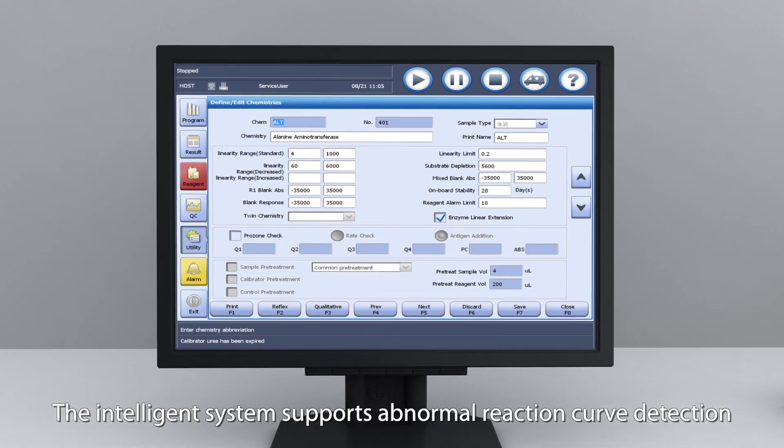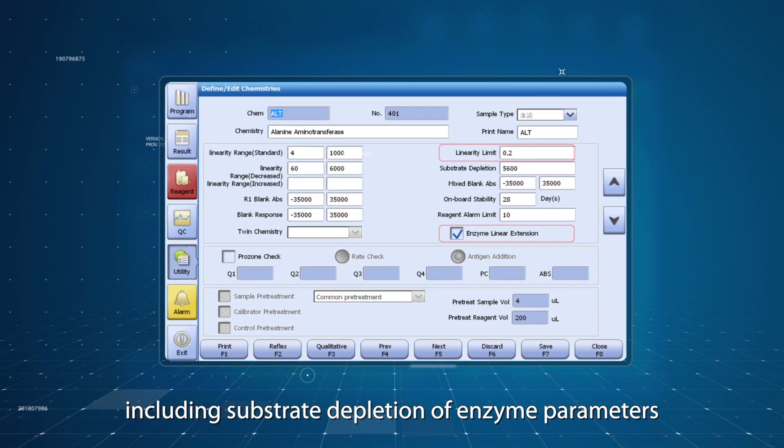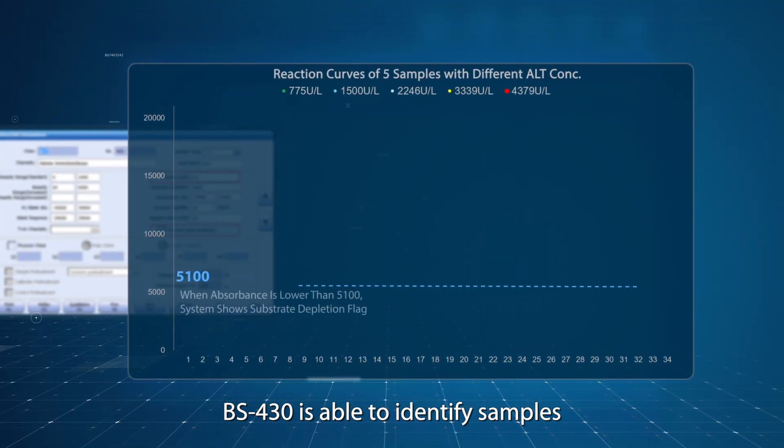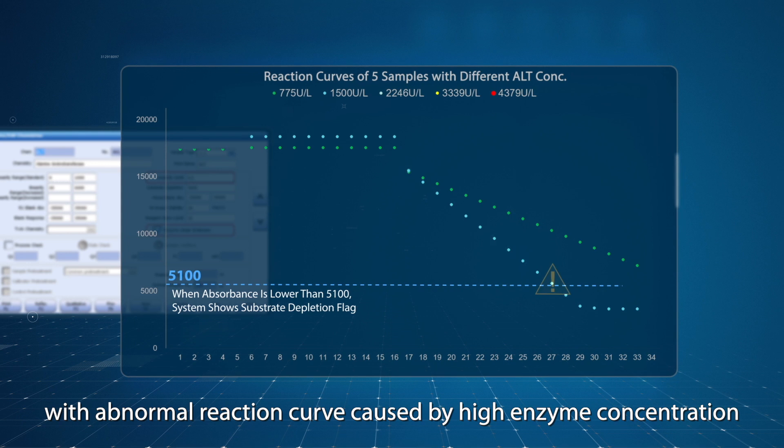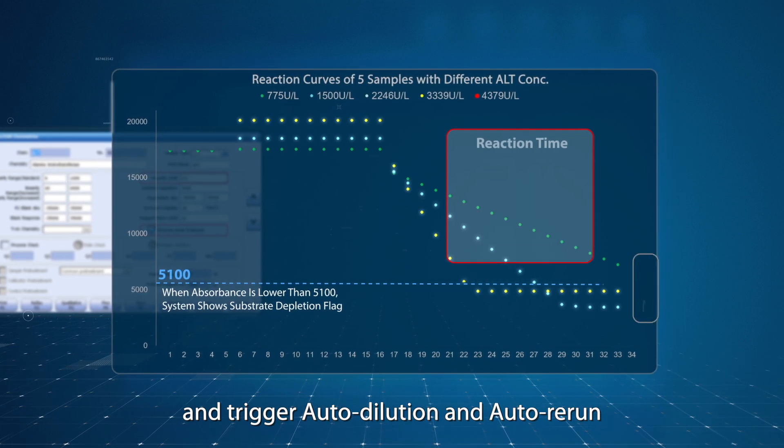The intelligent system supports abnormal reaction curve detection, including substrate depletion of enzyme parameters. BS430 is able to identify samples with abnormal reaction curve caused by high enzyme concentration and trigger auto-dilution and auto-rerun.